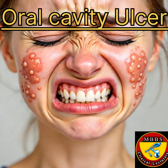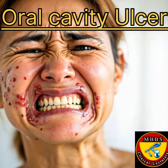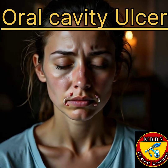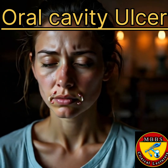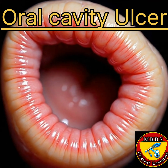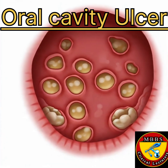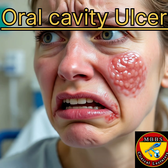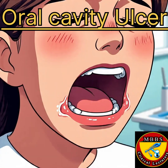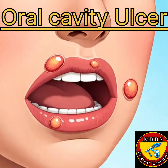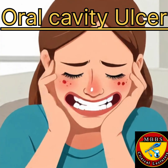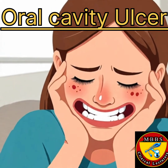Signs and symptoms: 1. Pain — oral ulcers can be painful, especially when eating, drinking, or speaking. 2. Appearance — oral ulcers can appear as small, round, or oval-shaped sores with a white or yellowish center and a red border. 3. Redness and swelling — the surrounding tissue may be red and swollen. 4. Difficulty eating or drinking — large or painful ulcers can make eating and drinking uncomfortable.